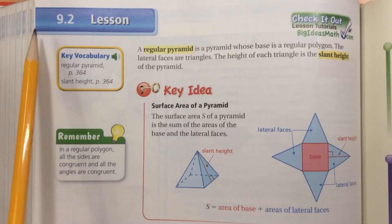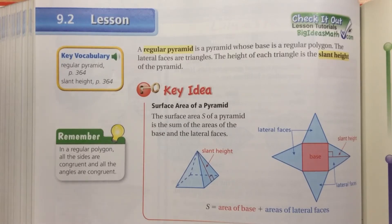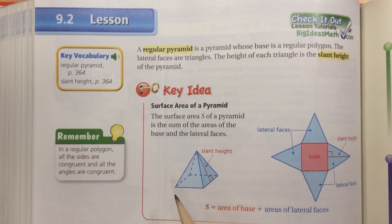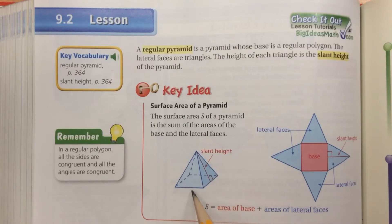This is lesson 9.2, where we're finding the surface area of pyramids. So 9.1 was the surface area of prisms, and 9.2 is the surface area of pyramids. The big difference between a prism and a pyramid: a prism has two bases connected by rectangles, while a pyramid has only one base and a point. The point is connected to the base by triangles, so it has triangles for lateral faces and only one base.